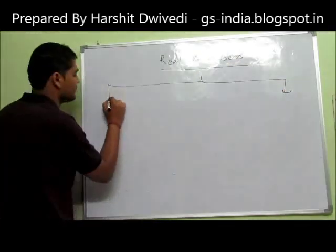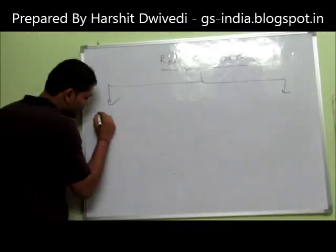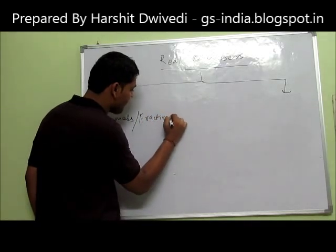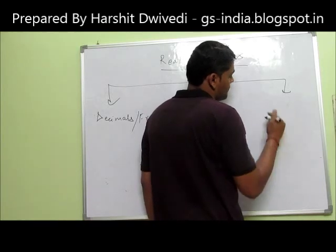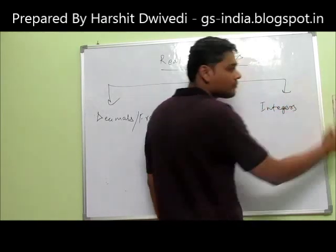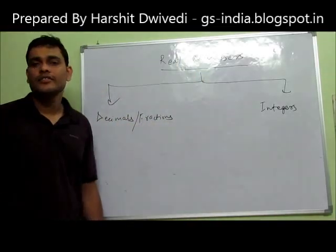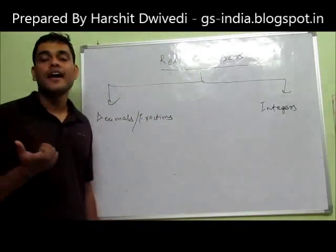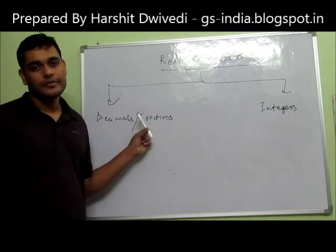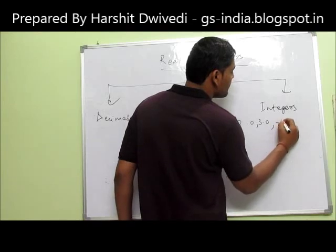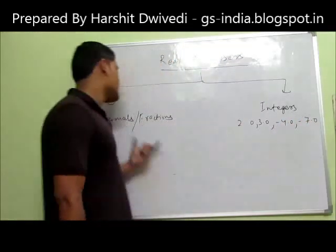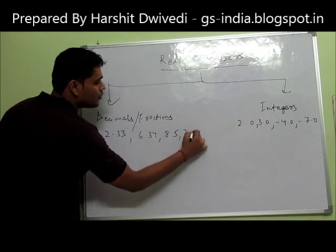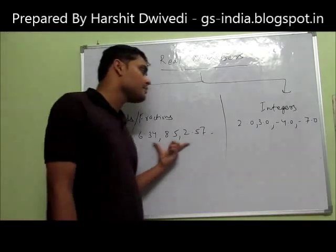The very first classification: real numbers are basically of two types. First are decimals or fractions. Second are integers. All those numbers which have their fraction part non-existent are termed as integers. All those numbers which have an existent fraction part are termed as fractions or decimals. Examples of integers are 2.0, 3.0, minus 4.0, minus 7.0 and when it comes to fractions or decimals it can be something like 2.33, 6.34, 8.5, 2.57 and so on. So basically these are the two things: decimal fractions and integers.